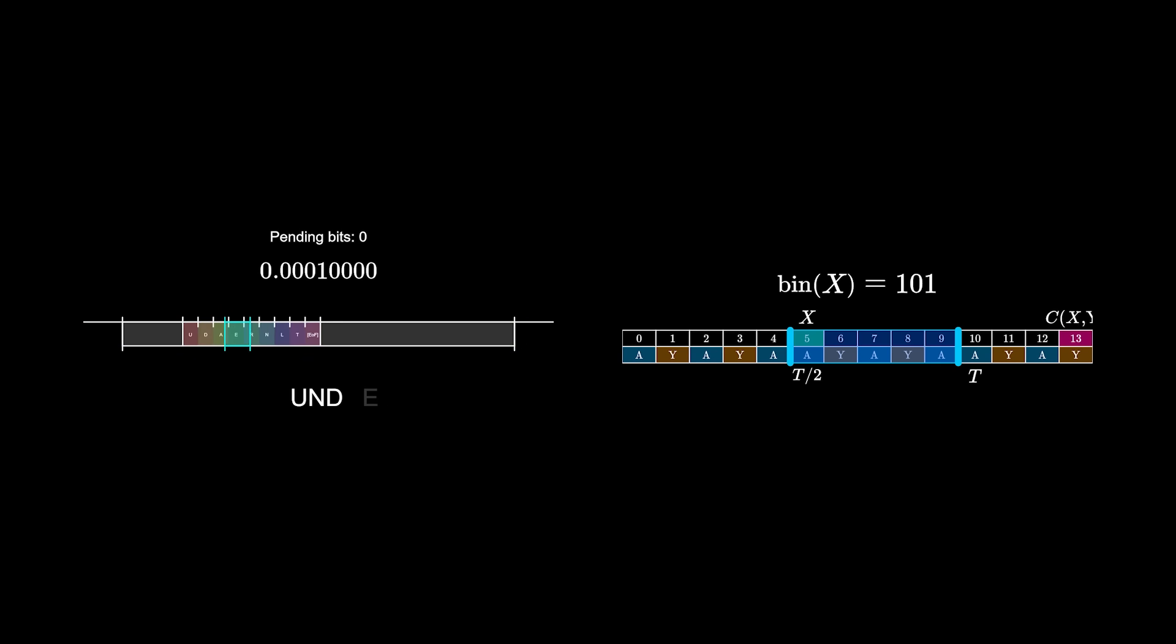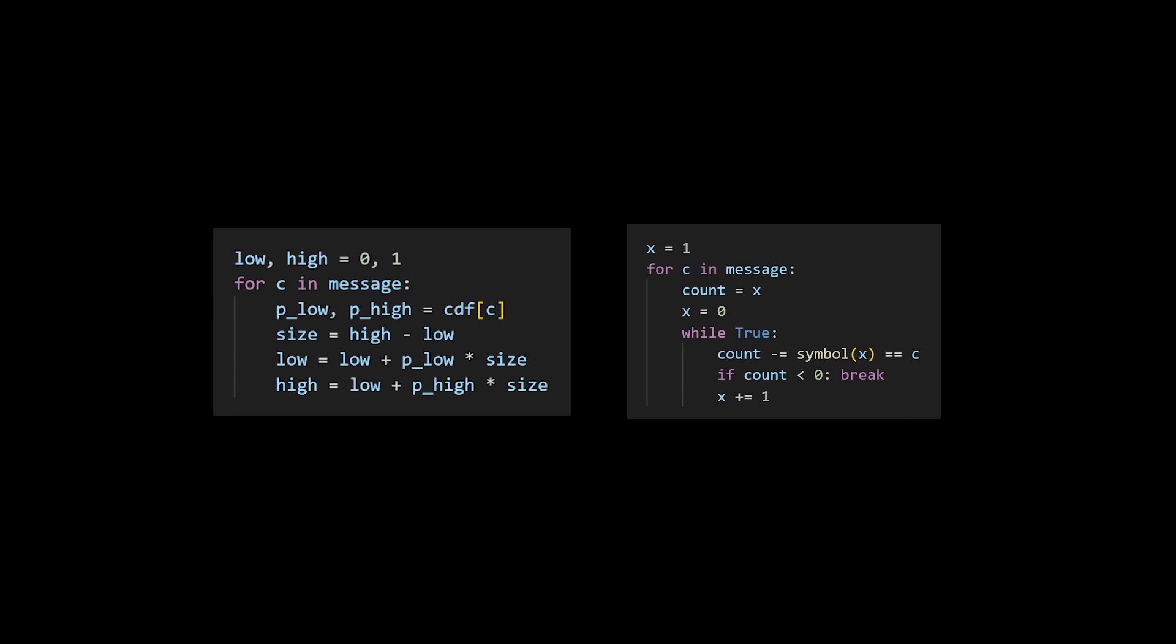In this video, I want to build these two algorithms from the ground up. They're both super-compact, clever algorithms that store data in a single number, and I think it's a shame that patents might discourage their use. But first, let's look at Huffman coding and see why it's not optimal.